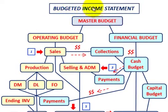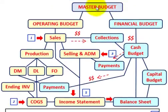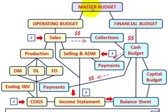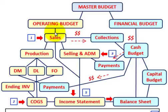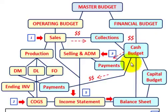What we're going to be going over here is our budgeted income statement. Starting with our schematic, we have our master budget, and then under our master budget we have our operating budget — shown here in yellow — and then under our master budget we're also going to have the financial budget, shown in blue.